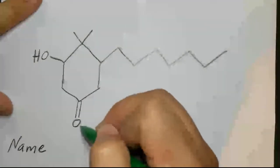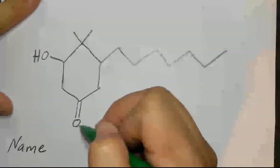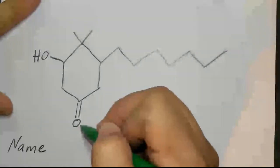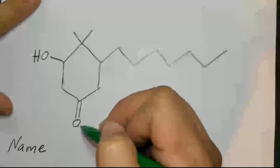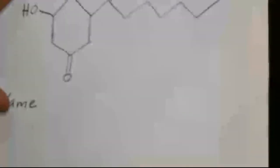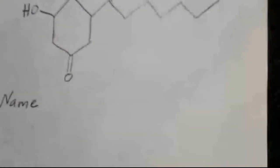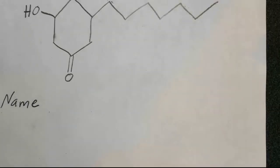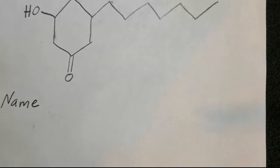When you go to the chart — I'm not going to bring it up, but you can look it up; maybe I'll pop it up on the screen — what you'll see on that chart is that the alcohol is lower in priority than the ketone.